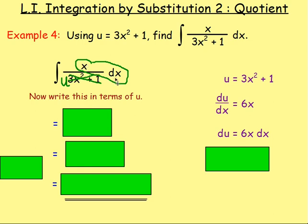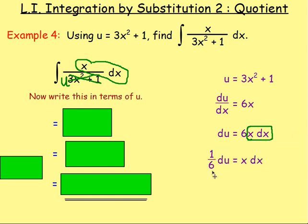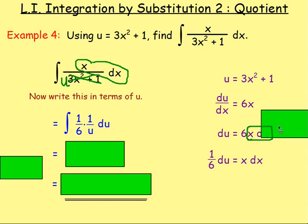Now that's pretty close to what we want. We're wanting to find out what x dx is equal to. Remember the bottom line becomes u and we're left with an x and a dx. But here we've got 6x dx. We don't want 6x dx, we just want to find out what x dx is equal to in terms of u. So to get that on its own, divide both sides by 6. Therefore 1/6 du will equal x dx. So we are going to replace x dx with 1/6 du, and we'll also have u in the bottom of this fraction, giving us 1/6 times 1 over u, and then du.